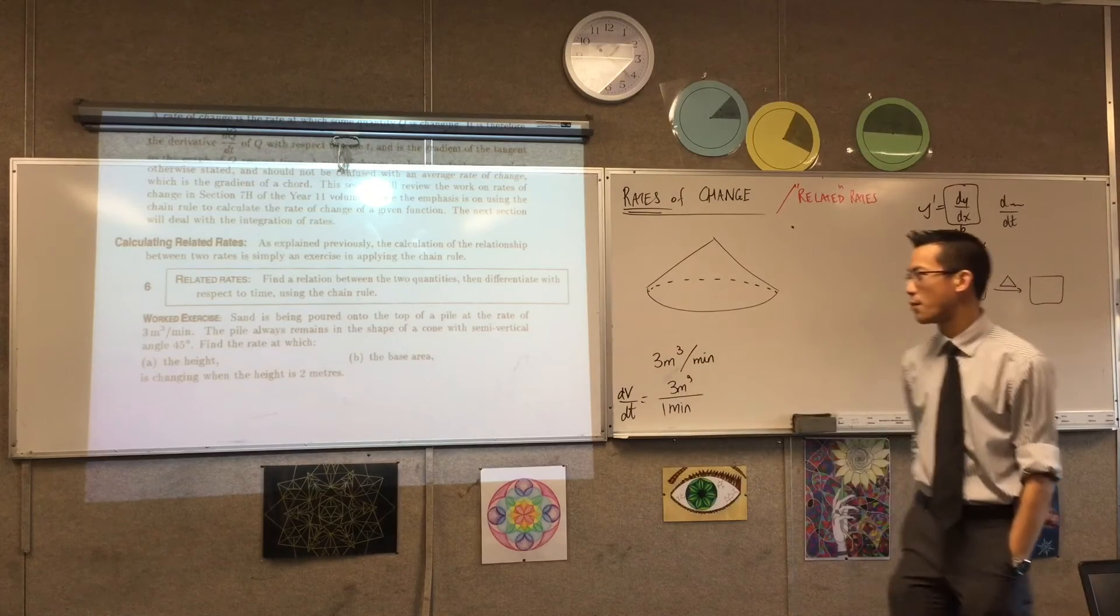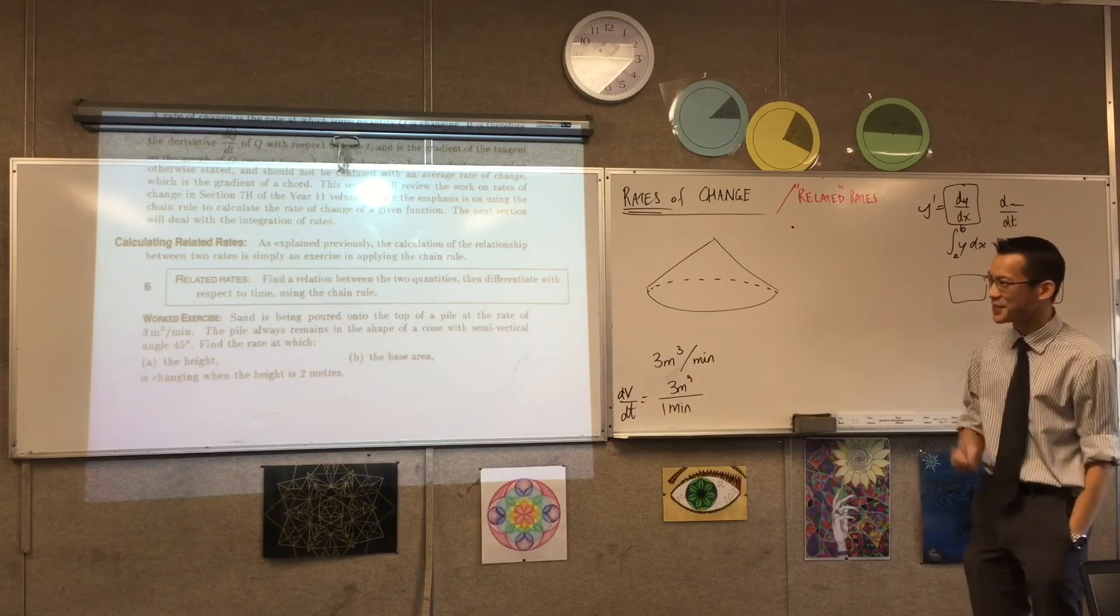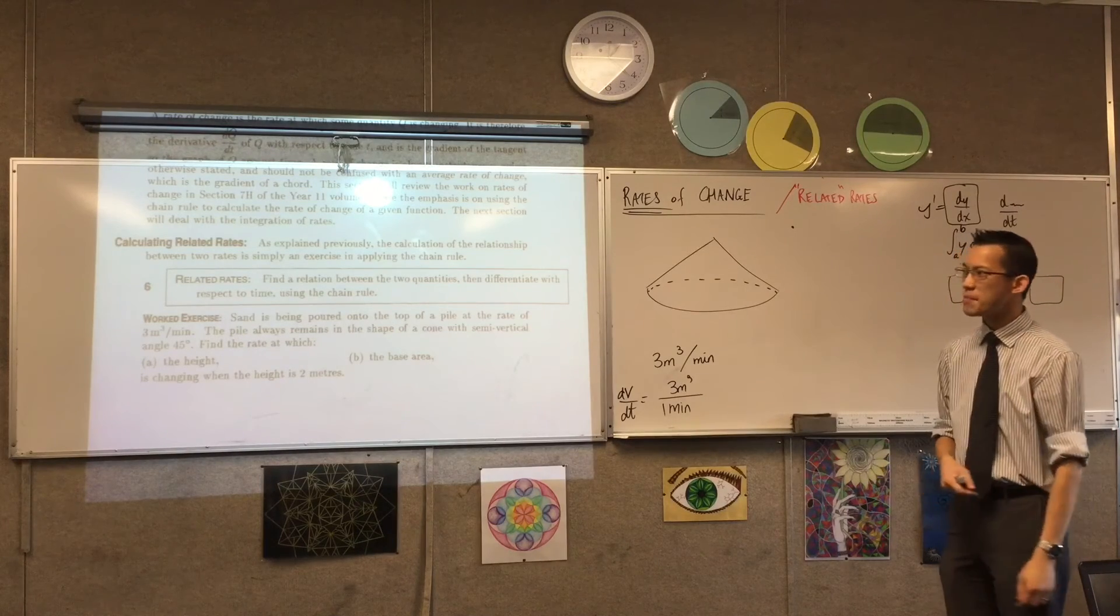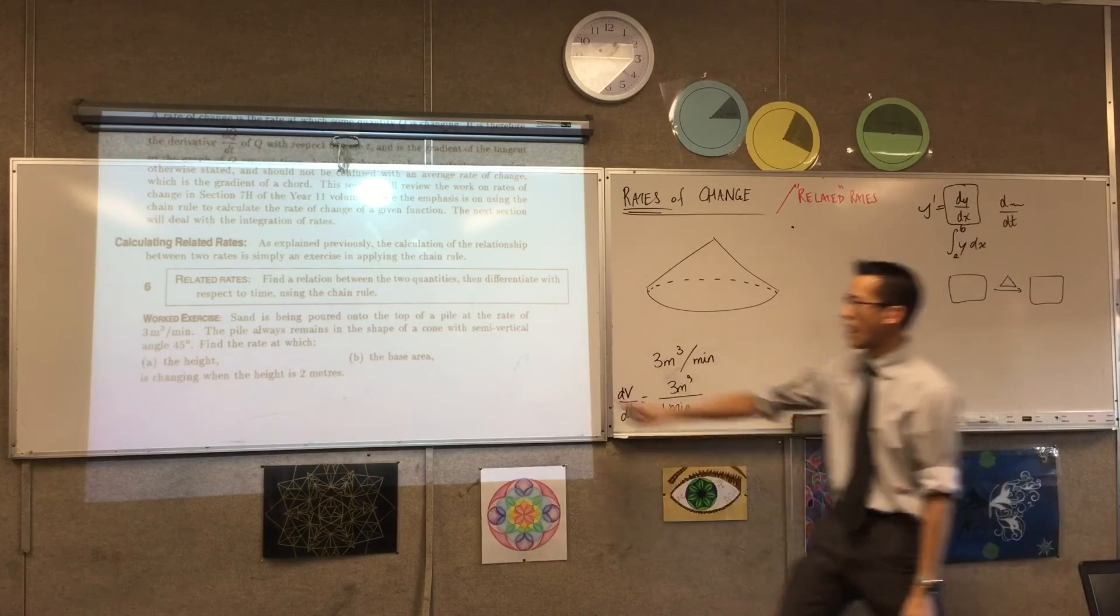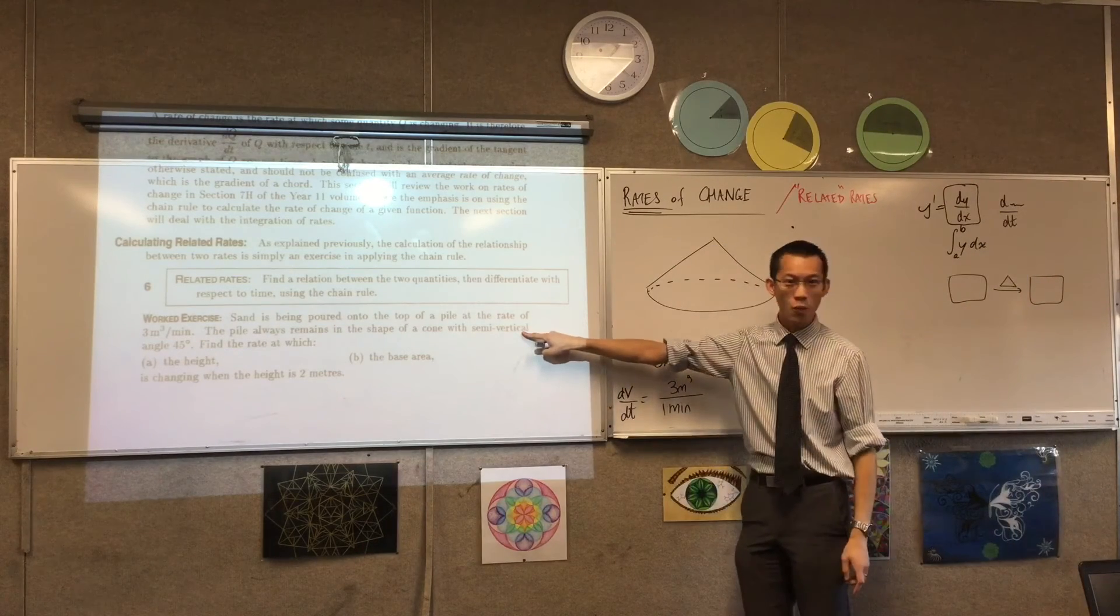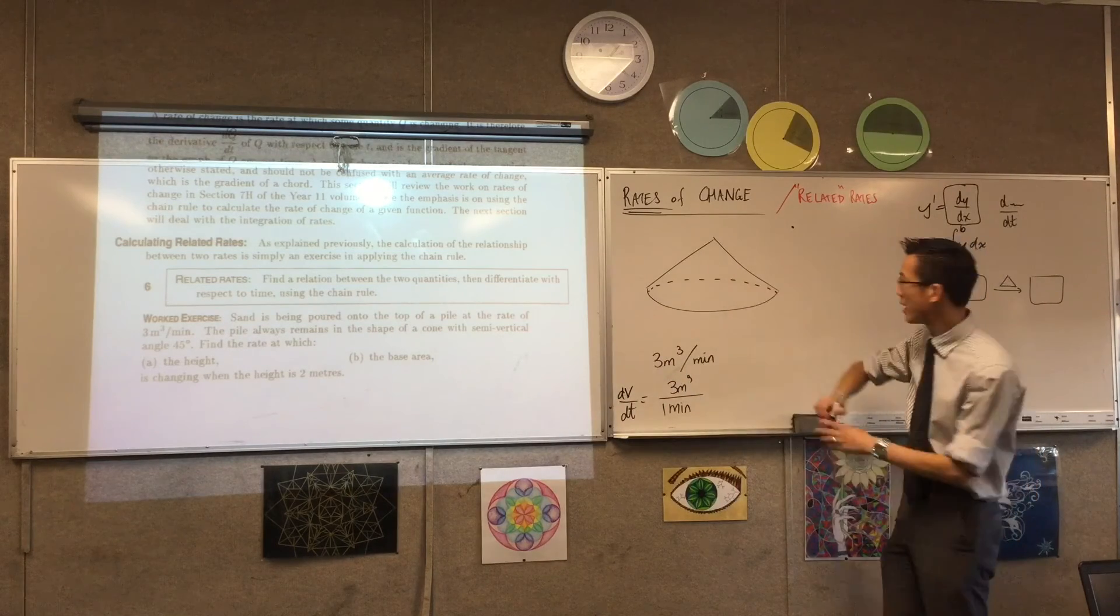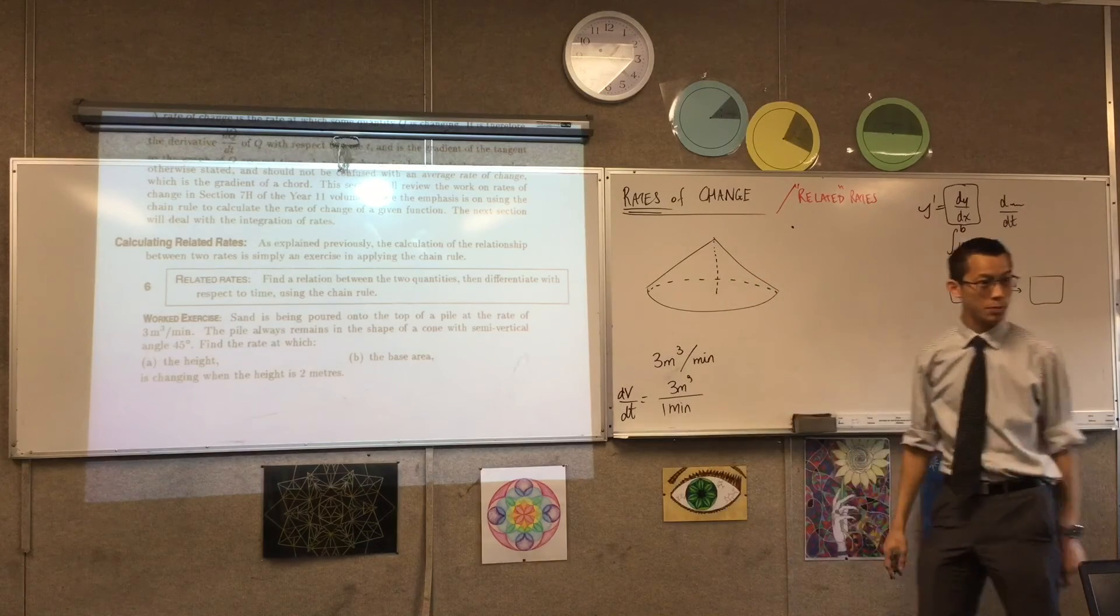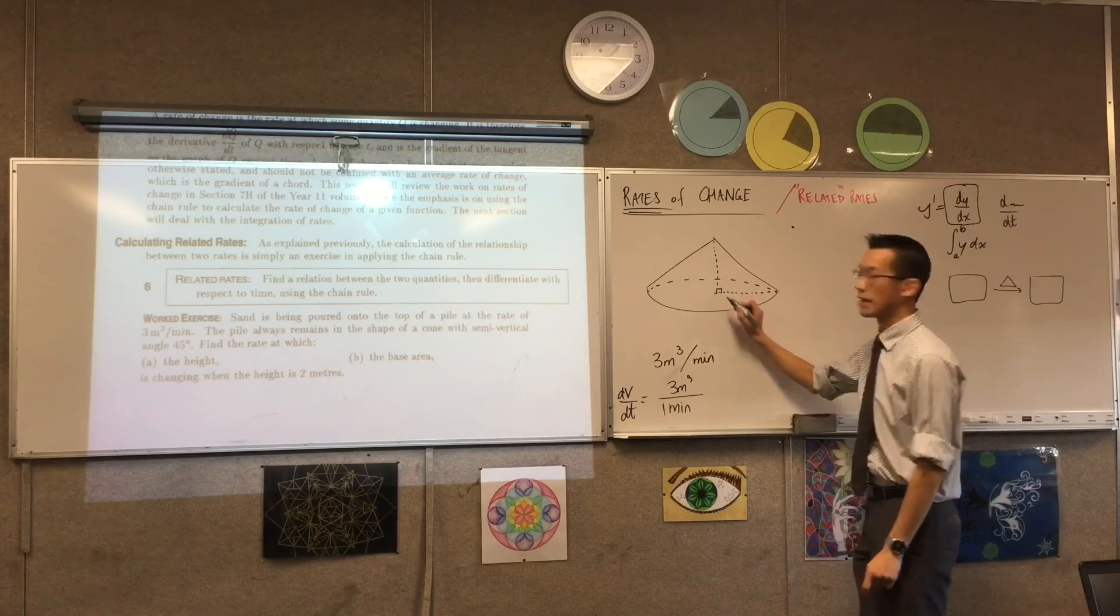The pile always remains in the shape of a cone, spoilers, with semi-vertical angle 45 degrees. Now that's a bit of specific language there. So the semi-vertical angle - it's half of some particular angle. Where is this angle? Where do you think it is? Yeah, it's going to be up there at the top. So I'm going to actually put in a vertical line here, so it's perpendicular to the base, like so.